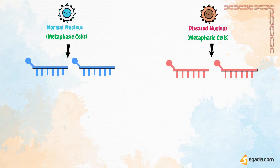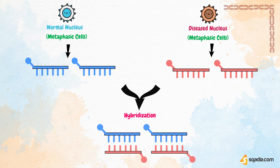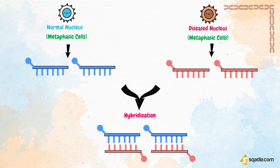We will mix both. We will get hybridization of the genome. Now, we need a fluorescent detector to compare the intensity of fluorescence. Let's move into details to understand it further.